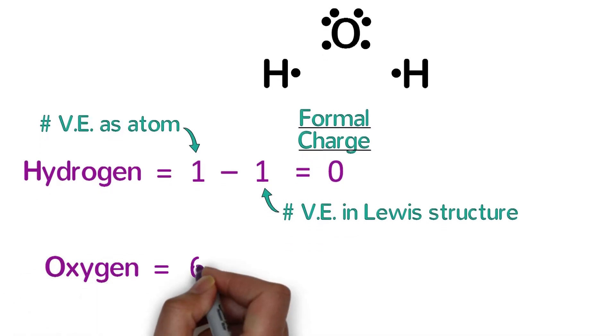An oxygen atom has six valence electrons, and in the Lewis structure of water, it has six valence electrons, so its formal charge is six minus six, which is also zero.